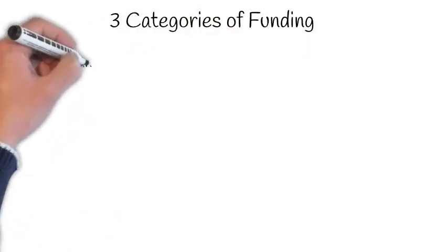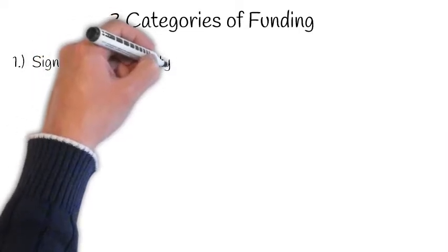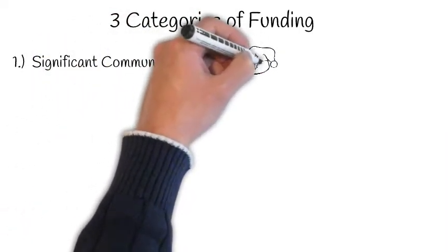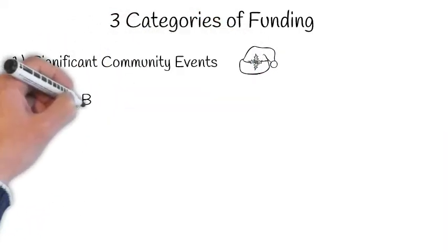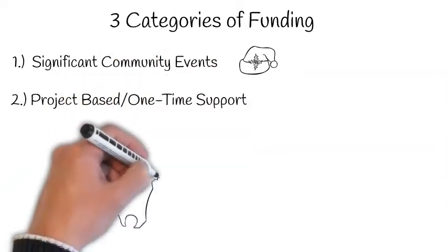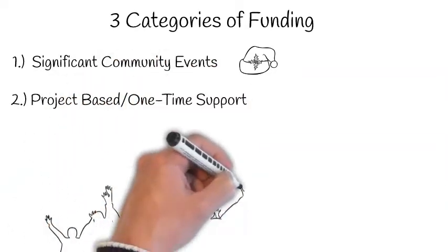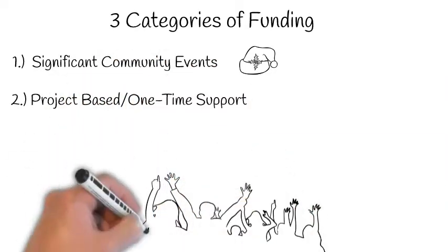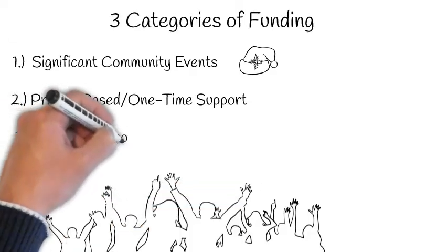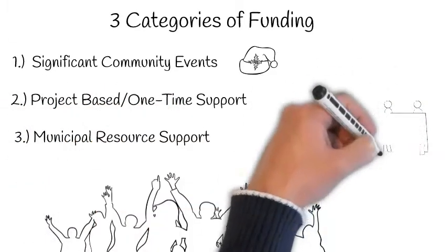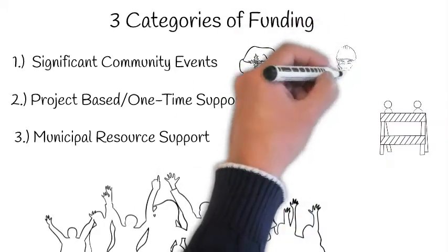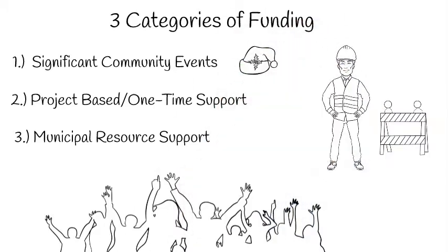The Community Grant Program has three categories of funding: continued funding for significant community events — examples include fall fairs and parades; project-based or one-time support, such as a new event or community undertaking; and event funding or municipal resources support — for example, staff help with road closures.